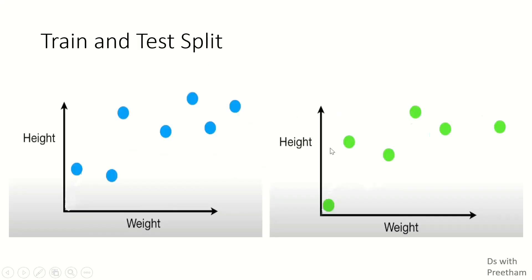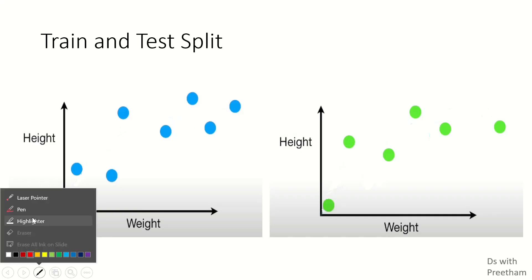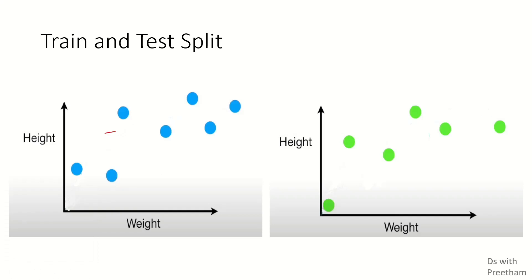So we need to split into test and train data. This is the blue train data and this is the test data.